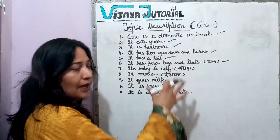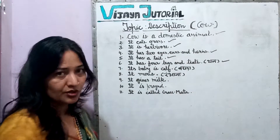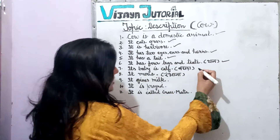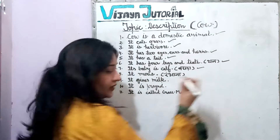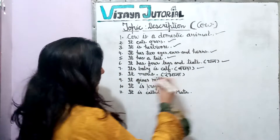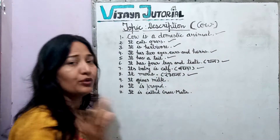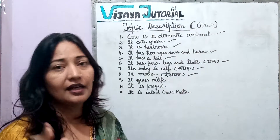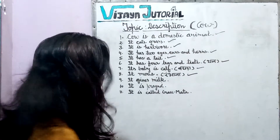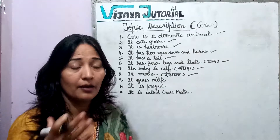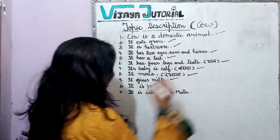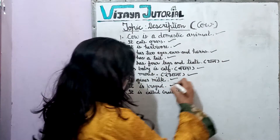Its baby is called a calf. The sound a cow makes is called mooing — in Hindi we say 'humbrana' or 'rambhana.' It gives us milk — meaning the cow provides us with milk.